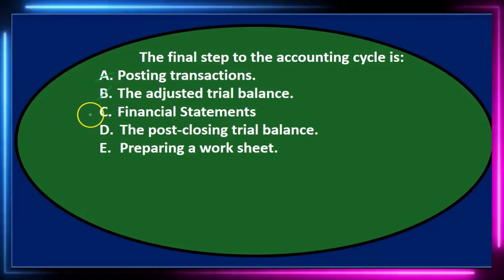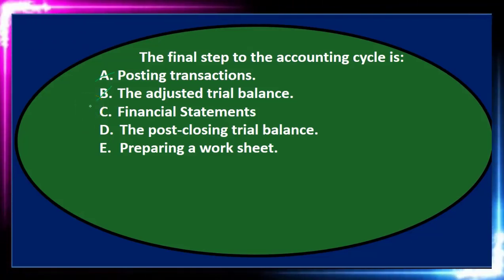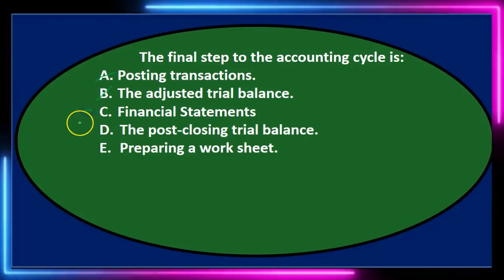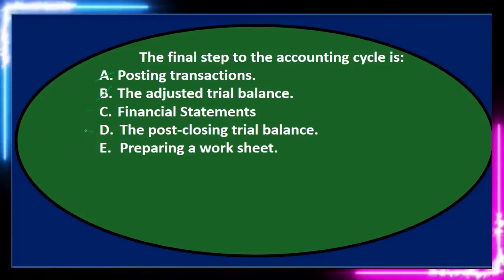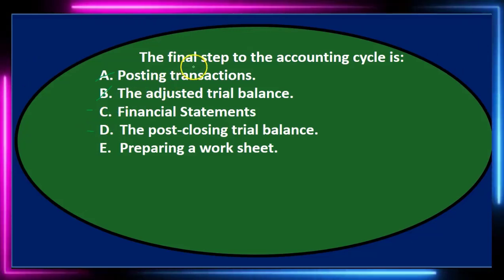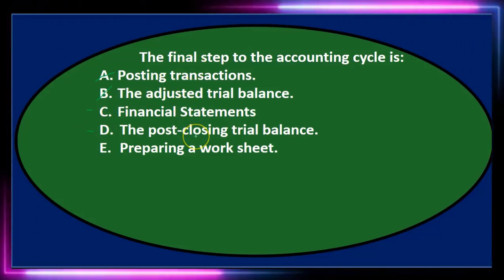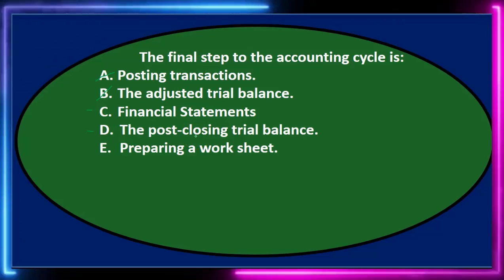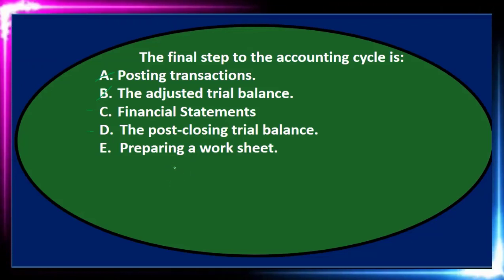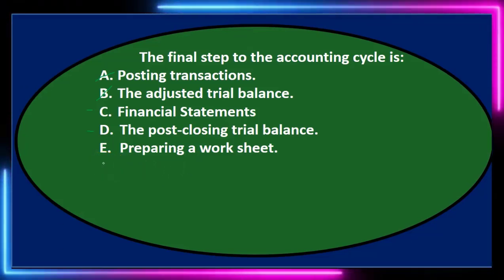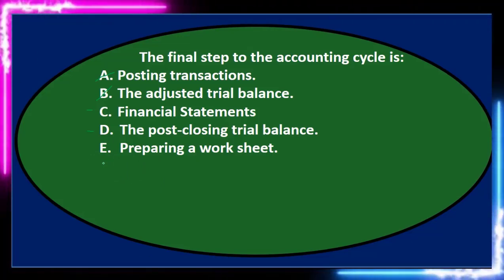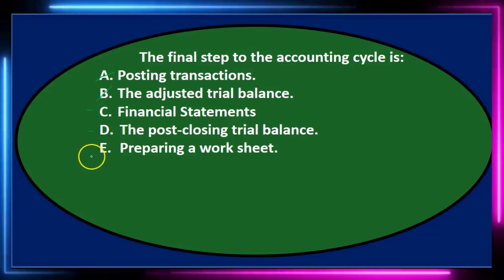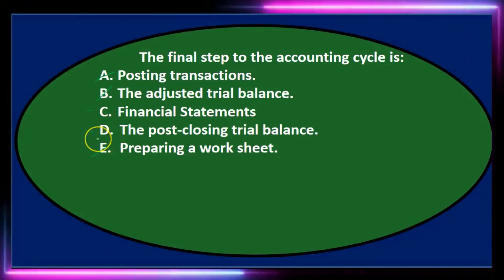C says financial statements — that's basically our ultimate goal, so I'll keep that. D says the post-closing trial balance. It has the word 'closing' in it, and when we're talking about the final step to the accounting cycle, that's notable. I'll keep that one. E says preparing a worksheet — the worksheet is part of the process but it's not the end step. I'll cross that out. We're left with C and D.